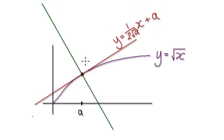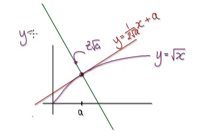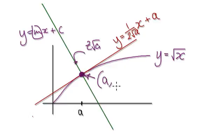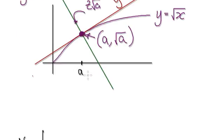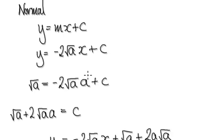Going back, we know that our gradient would be minus 2 root a, and we know it passes one particular point. This point here would be a comma root a. So we know the gradient of our normal line and we know it passes one particular point. Therefore, we can come up with the equation of our normal line.